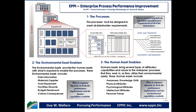The second thing we look at are the environmental assets that enable those processes, to determine if they are adequate to the needs. That includes data and information, materials and supplies, tools and equipment, facilities and grounds, budget and headcount, and very importantly, the culture and consequence systems that exist.